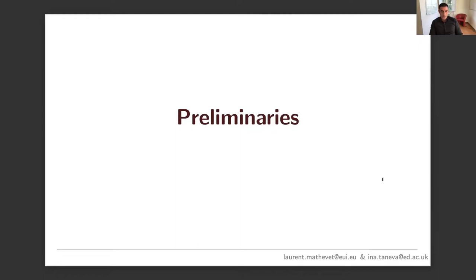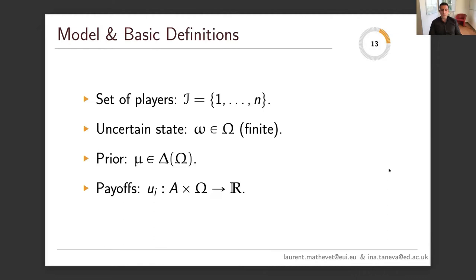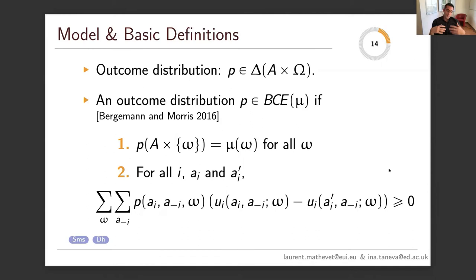Starting with standard material: there are finitely many players who interact in an environment with an uncertain state — an uncertain variable omega — which lives in a finite space. The players share a common prior mu about that uncertain state of the world, and their payoffs are possibly state-dependent. In games of incomplete information, we can describe outcomes using a distribution p over actions cross omega, so that p tells you what players do in each state and with what probability.